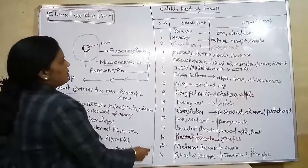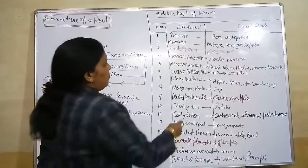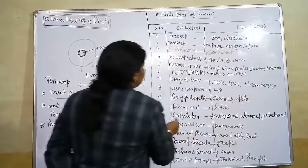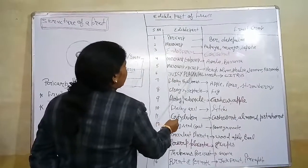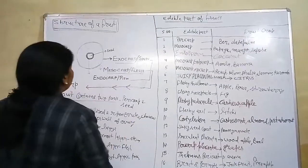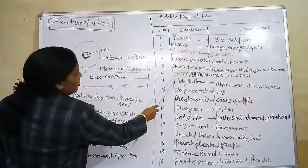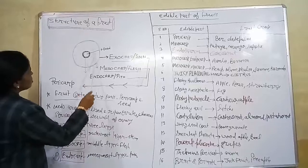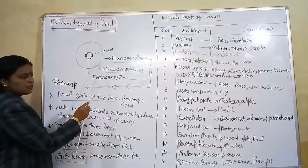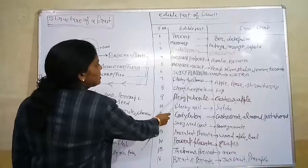The next one is mesocarp and epicarp — in peach, plum, and phalsa, mesocarp and endocarp are the edible portions. We can see in the fruit structure that mesocarp and after the outer covering, epicarp, is consumed.